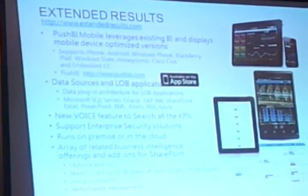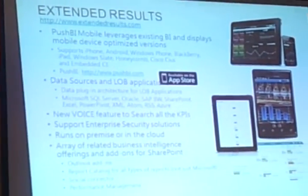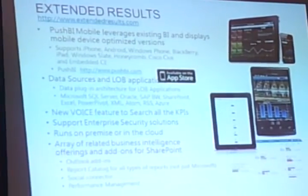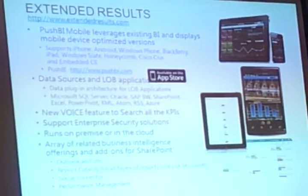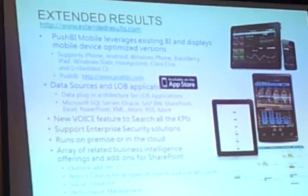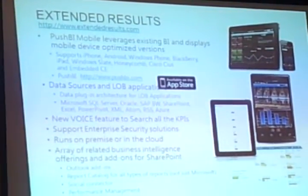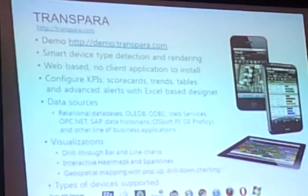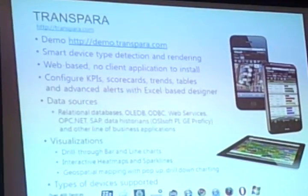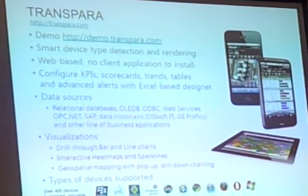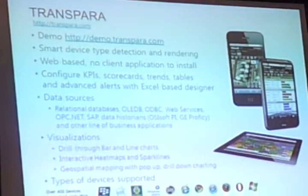Extended Results is another one. What I like about it — and I haven't tried it but I'm going to — is it says it's got a voice feature to search your KPIs. These things never work for me; I don't know if it's a factor of the Scottish accent, but maybe someone with a less regional accent than mine can try it. It does all sorts of things and connects to Outlook. Transpara is another nice one as well — they have sort of heat map things which customers quite like.